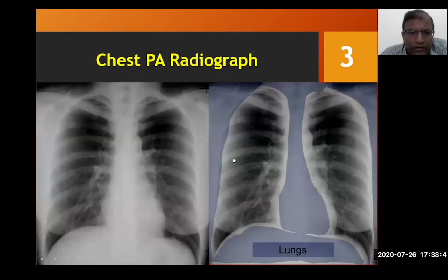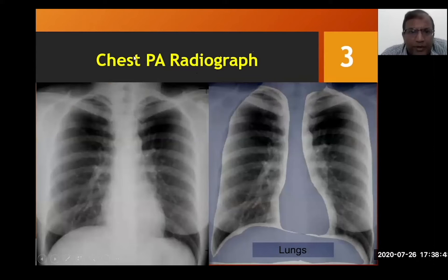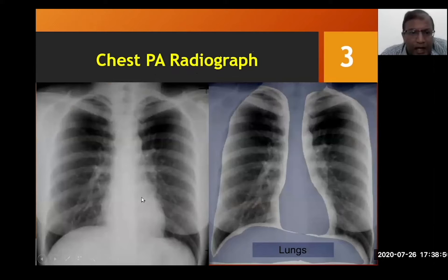The main radiograph taken in day-to-day practice is a chest PA radiograph, where the x-rays enter through the posterior aspect of the patient and exit through the anterior aspect. This is the radiograph we commonly see.